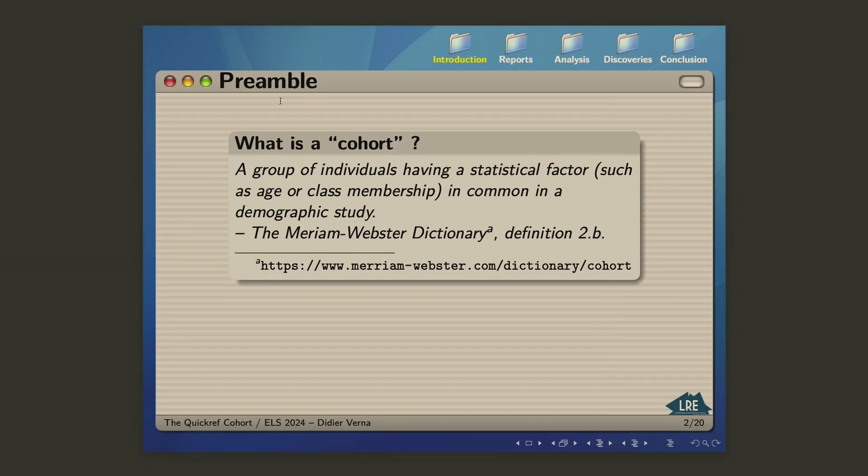First of all, I would like to start with a short preamble because after talking to a number of people here, it occurred to me that maybe the term cohort, or at least the way that we use it in the French academic system, is perhaps a bit specific to that. A cohort is a group of individuals having a statistical factor such as age or class membership in common in a demographic study.